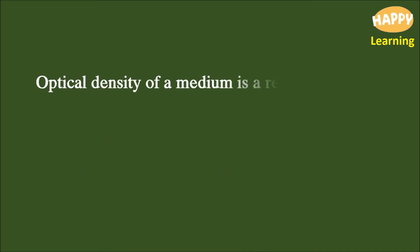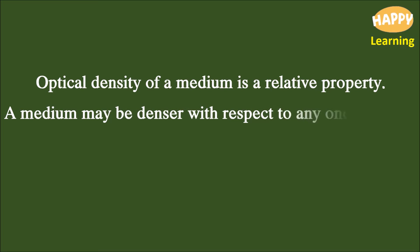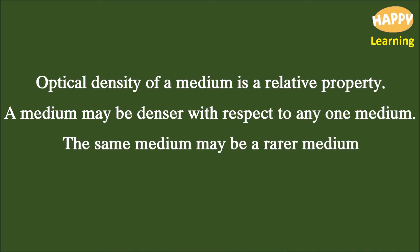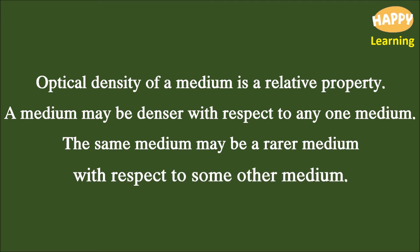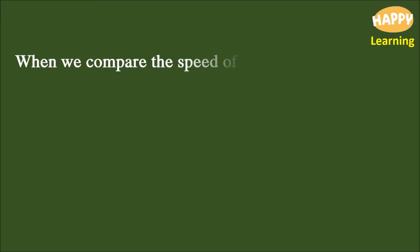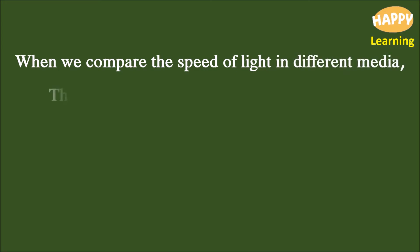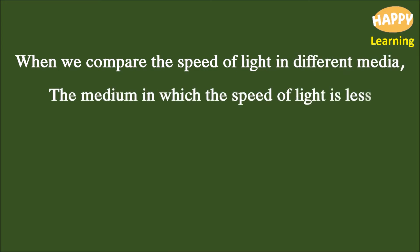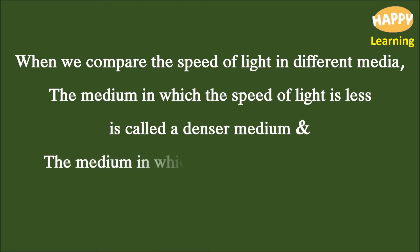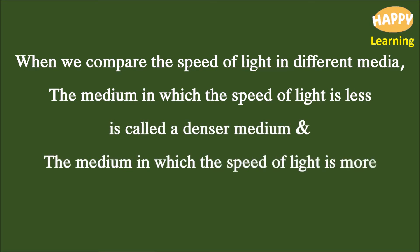Optical density of a medium is a relative property. A medium may be denser with respect to one medium, and the same medium may be a rarer medium with respect to some other medium. When comparing the speed of light in different media, the medium in which the speed of light is less is called a denser medium, and the medium in which the speed of light is more is called a rarer medium.